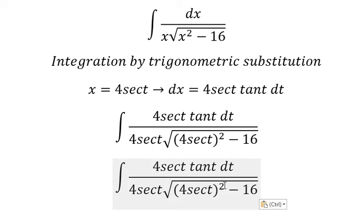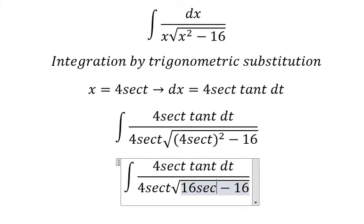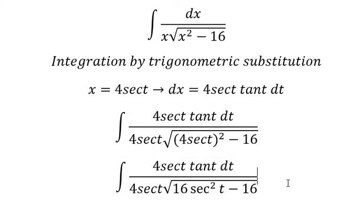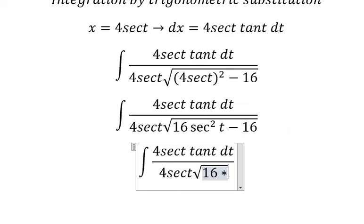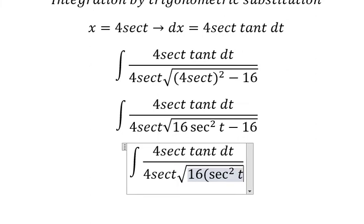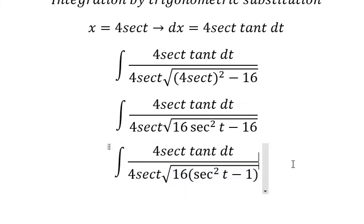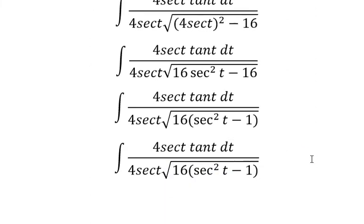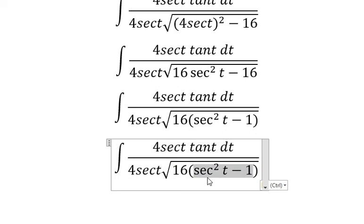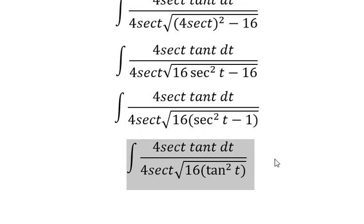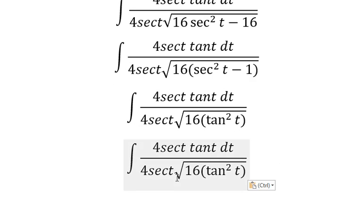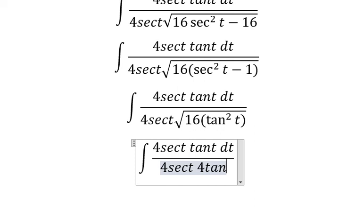We can factor out 16 sec of t squared minus 16. This one is about identity. The square root of 16 times tan squared, we have 4 times tan.